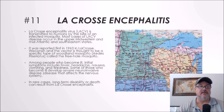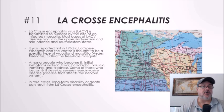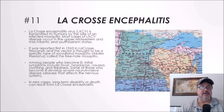Number eleven: La Crosse encephalitis. La Crosse encephalitis virus is transmitted to humans by the bite of an infected mosquito. Most cases occur in the upper Midwestern, mid-Atlantic, and southeastern states. It was first reported in 1963 in La Crosse, Wisconsin, and the vector is thought to be the tree hole mosquito, an Aedes species. Among people who become ill, initial symptoms include fever, headache, nausea, vomiting, and tiredness. Some develop severe neuroinvasive disease, and in rare cases long-term disability or death can result.